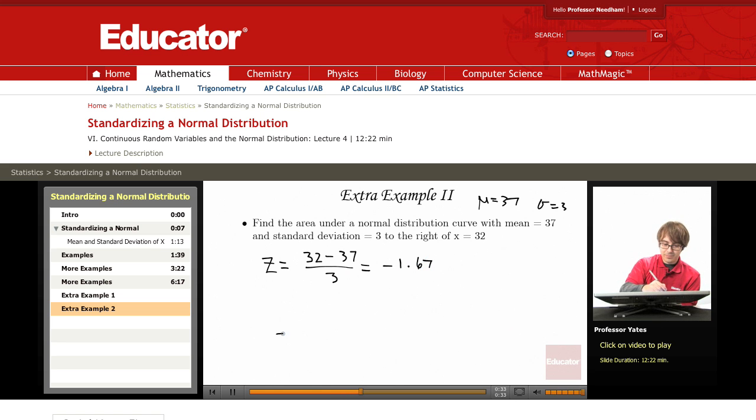So I'm drawing this out. Alright, there's my standard normal curve centered at 0. Here's negative 1.67 out here. I'm trying to find the area to the right. Well, that is going to be 1 minus the area to the left of negative 1.67. So this is 1 minus 0.0475, and that gives me 0.9525.